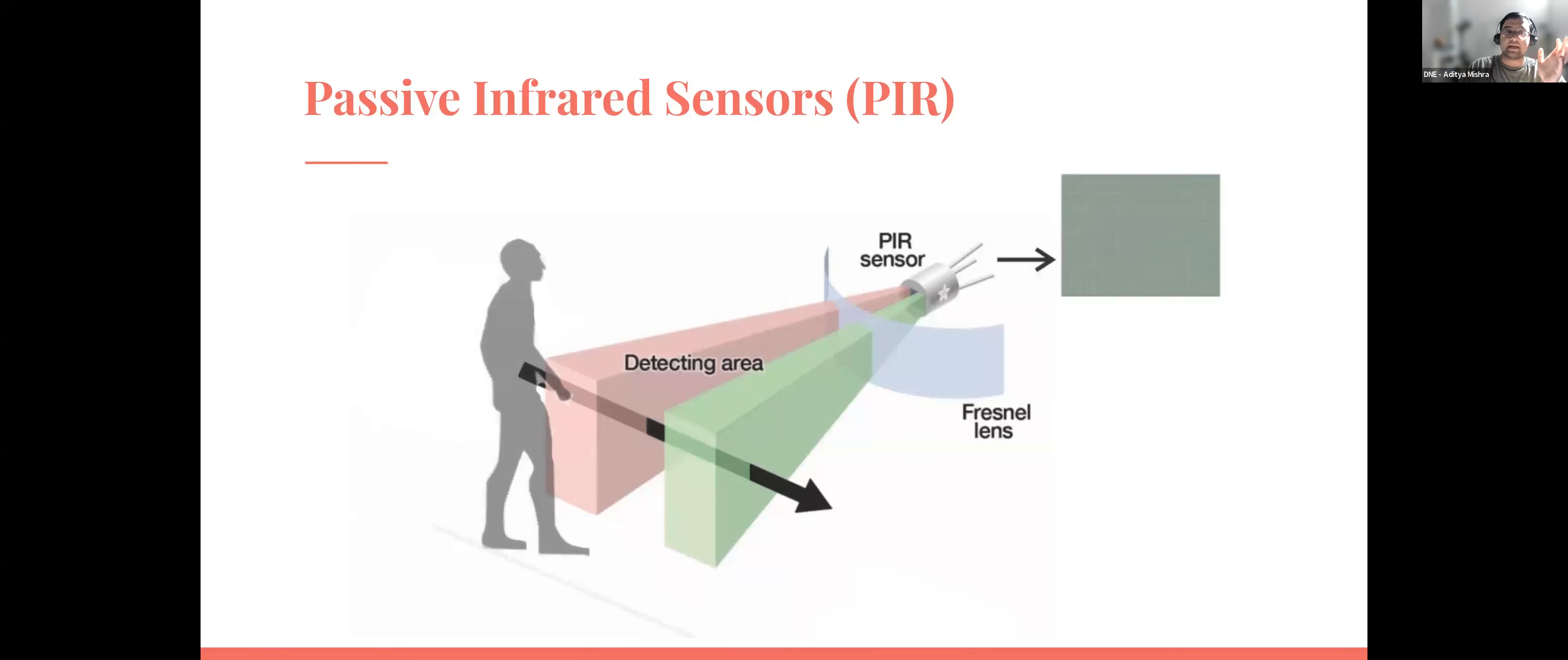As you can see from this diagram, PIR sensors work on the concept of detecting changes in infrared radiation patterns in their field of view. In this example, a human crosses over in the field of view. And because of that, you can see a changing infrared radiation pattern right here. That's pretty much how it works at a very high level.